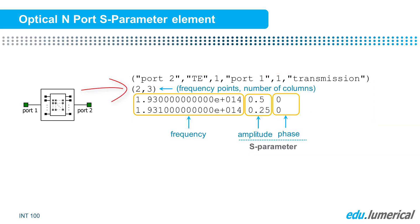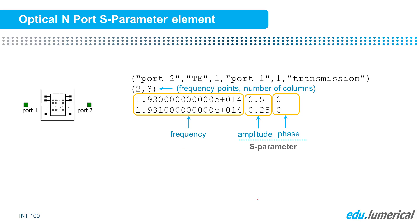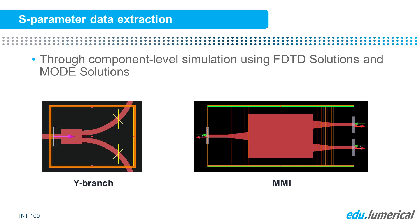The next line indicates the number of rows and columns of the data. There will be two rows corresponding to two frequencies and three columns, where the first column will contain the frequency data, the second column will include the amplitude of the S-parameters, and the third column will include the phase of the S-parameters in radians.